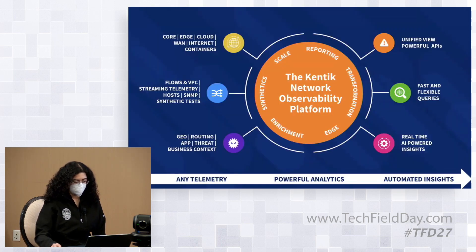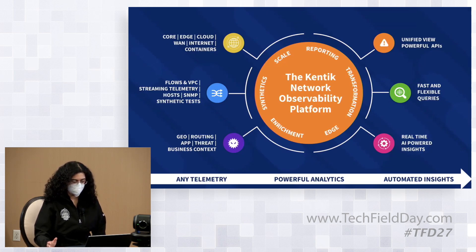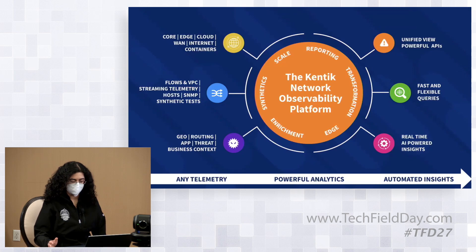Here is basically an overview of how Kentik's network observability platform works. The left side is basically the data coming in — all the networking data — and then Kentik ingests all the data from these various sources, like different clouds and different devices and vendors, and makes these tools available for customers, like powerful APIs, flexible queries, and various insights to let customers build the tools that they need.